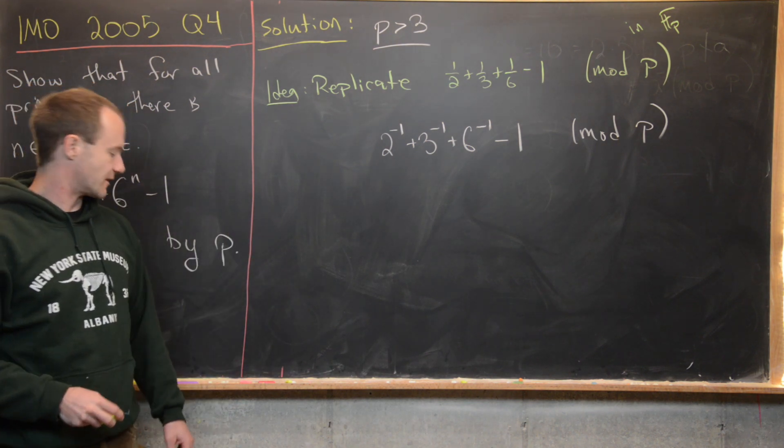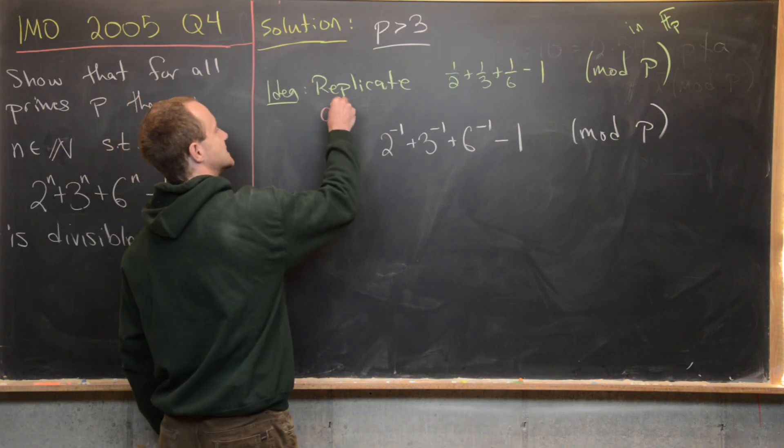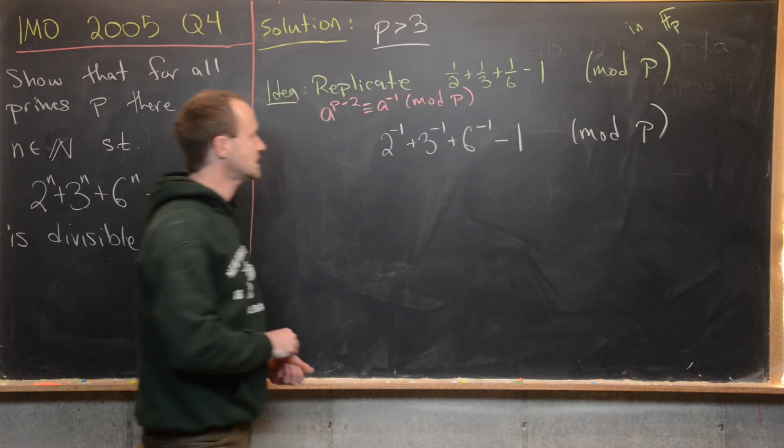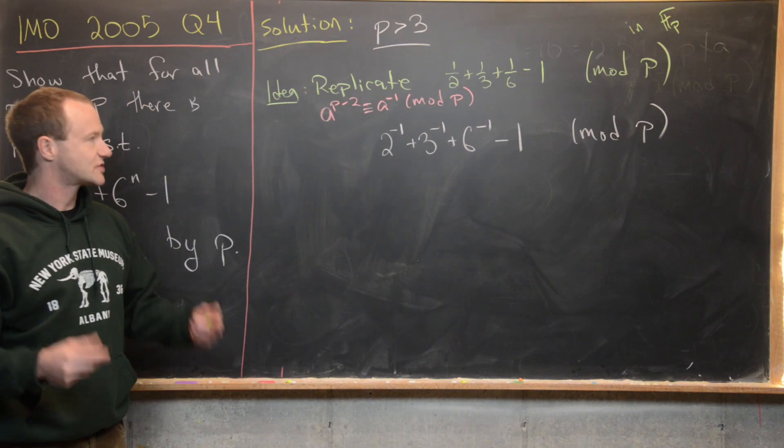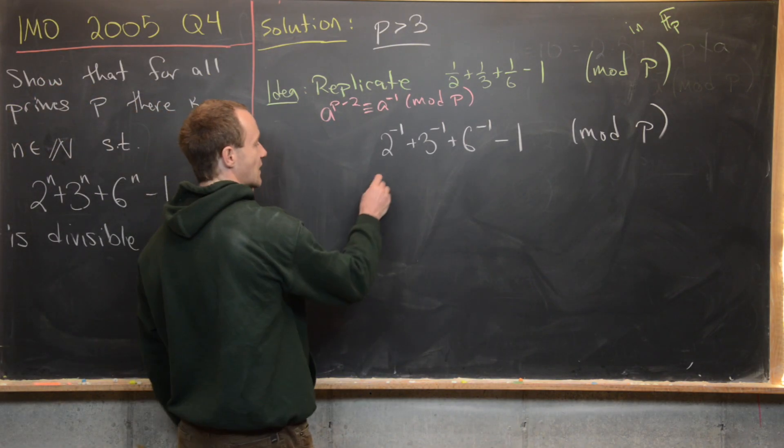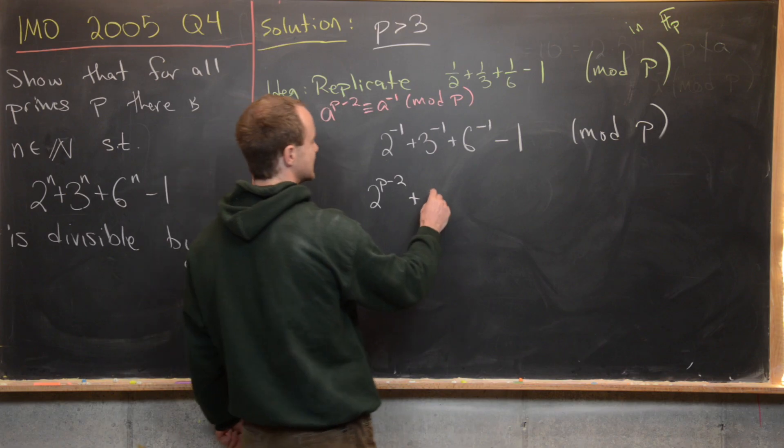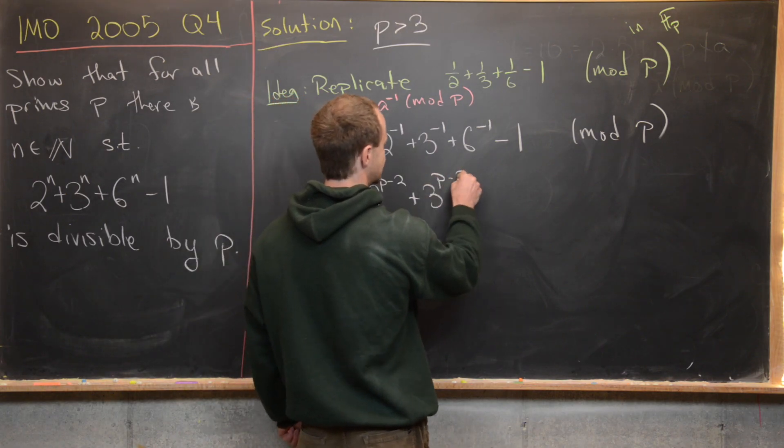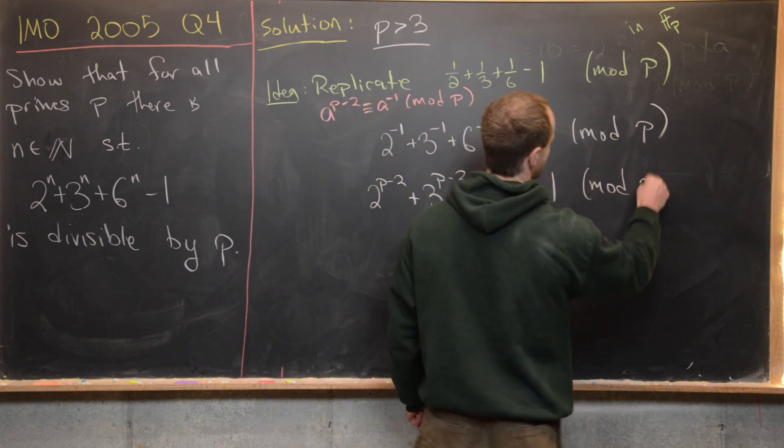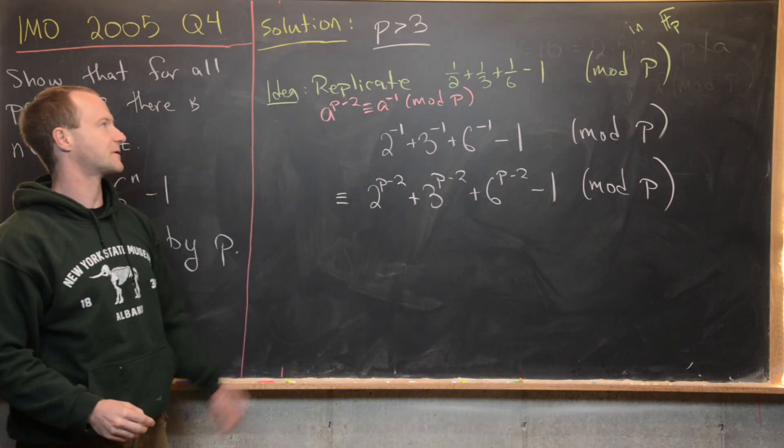We can use Fermat's little theorem along with that slight tweak to Fermat's little theorem that says a^(p-2) is congruent to a^(-1) mod p to write each of these with natural number exponents instead of negative exponents. And that's exactly what we'll do. So we can write this 2^(-1) as 2^(p-2). We can write this 3^(-1) as 3^(p-2). This is 6^(p-2) - 1. This is all happening mod p. So this is congruent to that mod p, again using this Fermat's little theorem here.